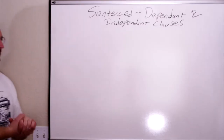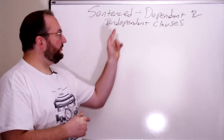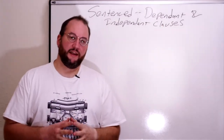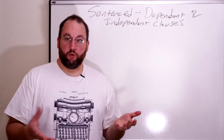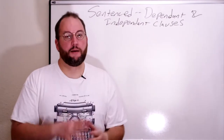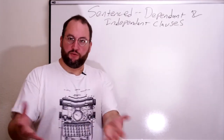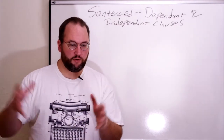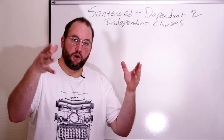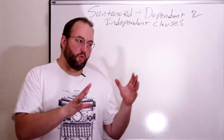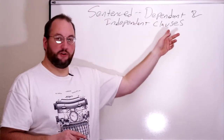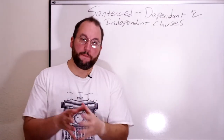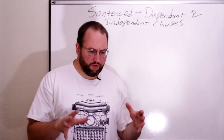Hi everybody and welcome to English 101 with David Hancock. I am David Hancock and in this episode of Sentenced we're going to talk about the difference between dependent and independent clauses. This video is also going to be about the difference between how we use a comma and how we use a semicolon. As we get more into the individual usage of punctuation throughout the course of this channel's growth we'll see how these are used in more detail, but for today we're going to talk about the difference between these two types of clauses, what a clause is, and how they can be used in sentences with proper English grammar.